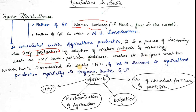The Green Revolution in India commenced in the early 1960s and led to a significant increase in agricultural production, especially in Haryana, Punjab and Uttar Pradesh. The four aspects were: introduction of HYV seeds, mechanization with tractors, improved irrigation, and use of chemical fertilizers and pesticides. The Green Revolution was a huge success in India.